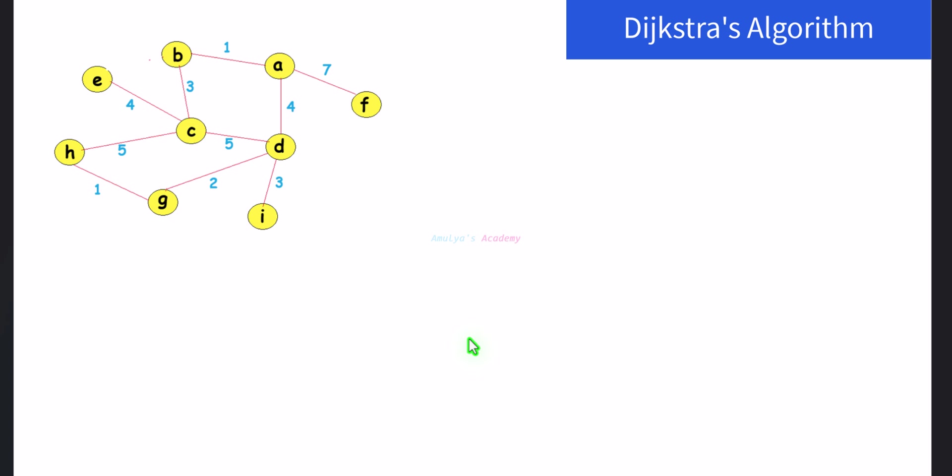Hello and welcome back to Amulya's Academy YouTube channel. We were discussing Dijkstra's algorithm. Today let's write a Python program to find the shortest distance from a node to all other nodes in the graph using Dijkstra's algorithm.